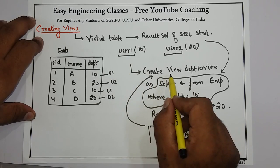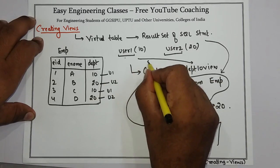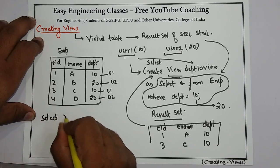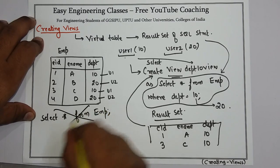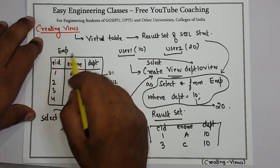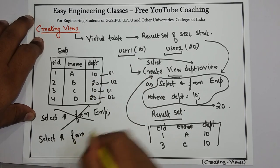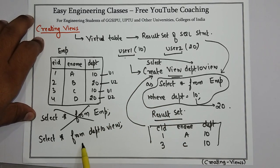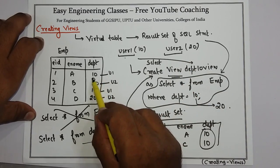Now user1 should have access to this view only, not the table. Suppose user1 has access to selecting data from this view. So user1 will type the command like SELECT * FROM. If user1 tries to select from the base table, there will be an error because user1 does not have access to fire SELECT on that table. So user1 will fire only SELECT * FROM department10_view. If user1 fires a query like this, he can see the records of only employees working in department 10. Similarly, user2 will fire a query and can see only the records of employees working in department 20.